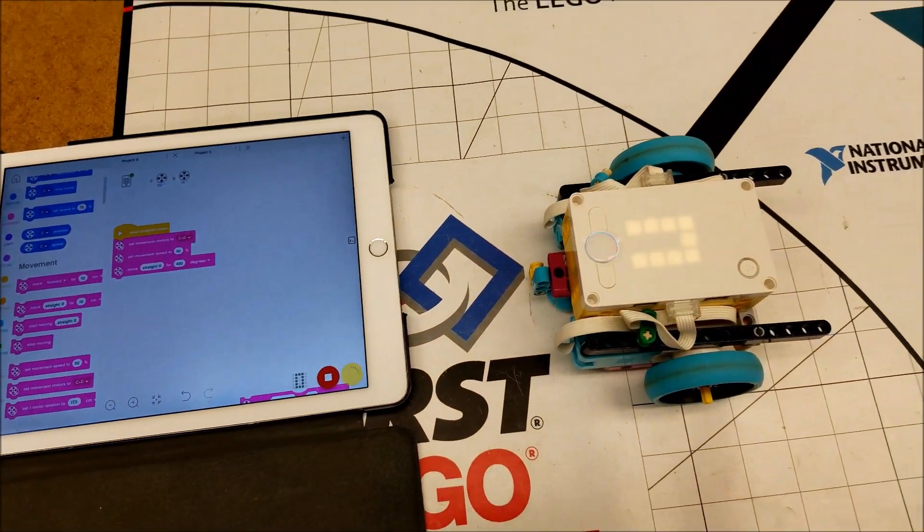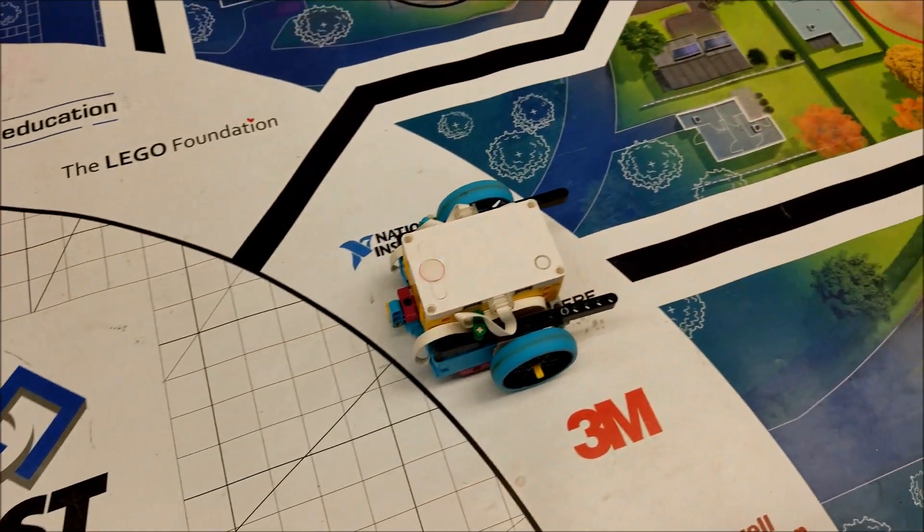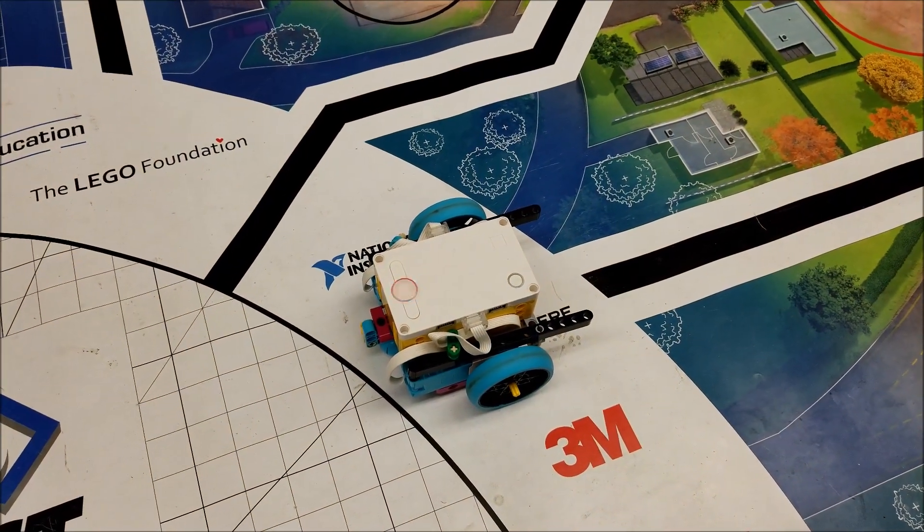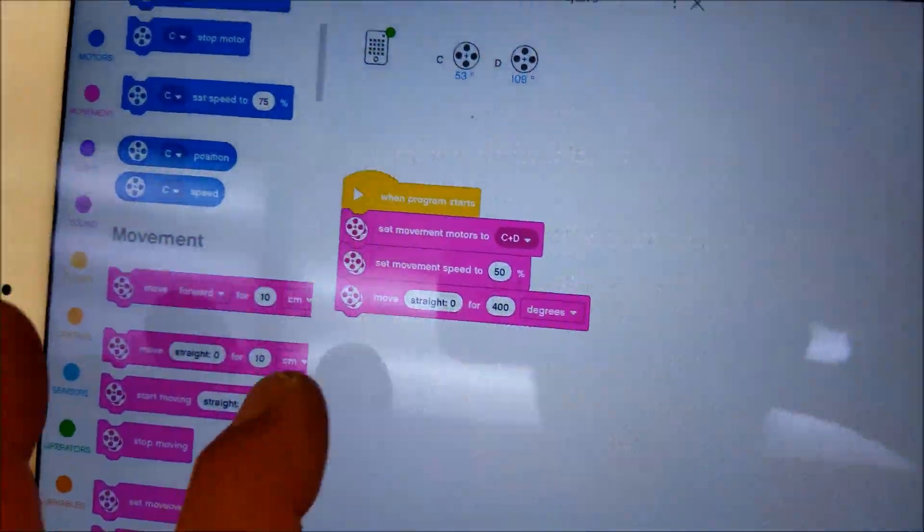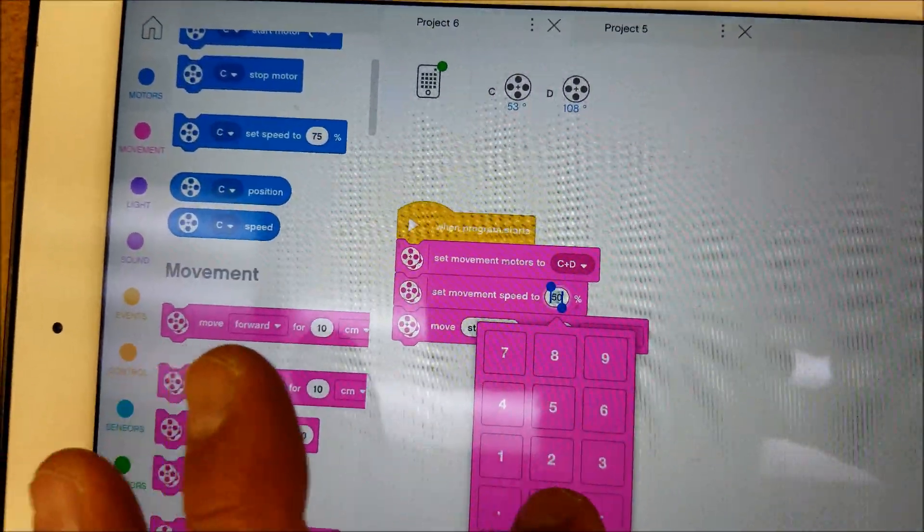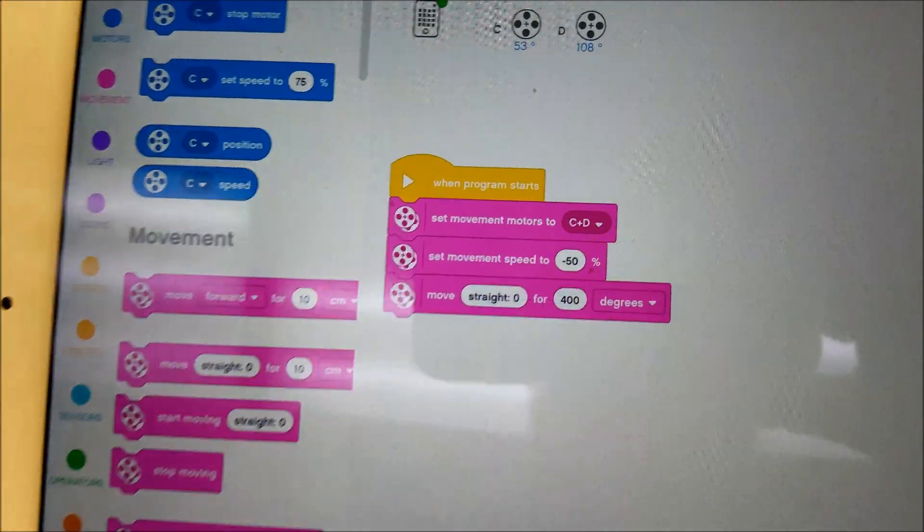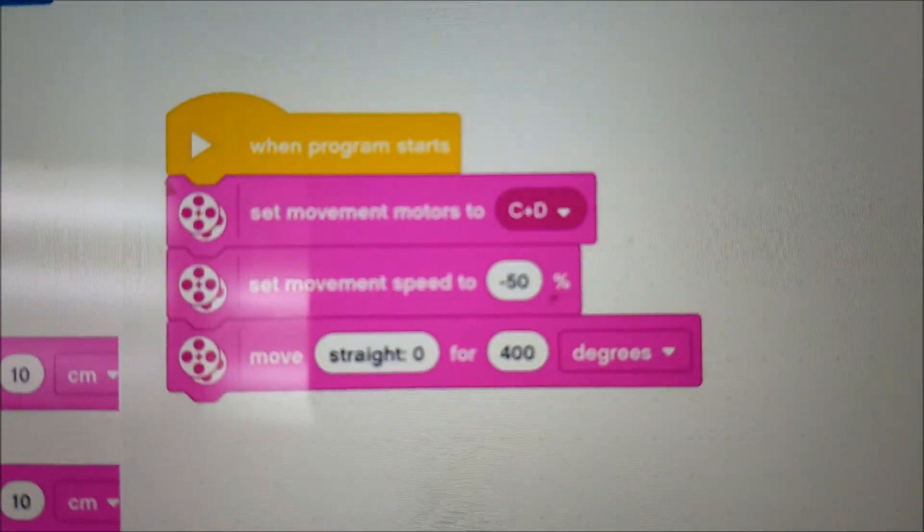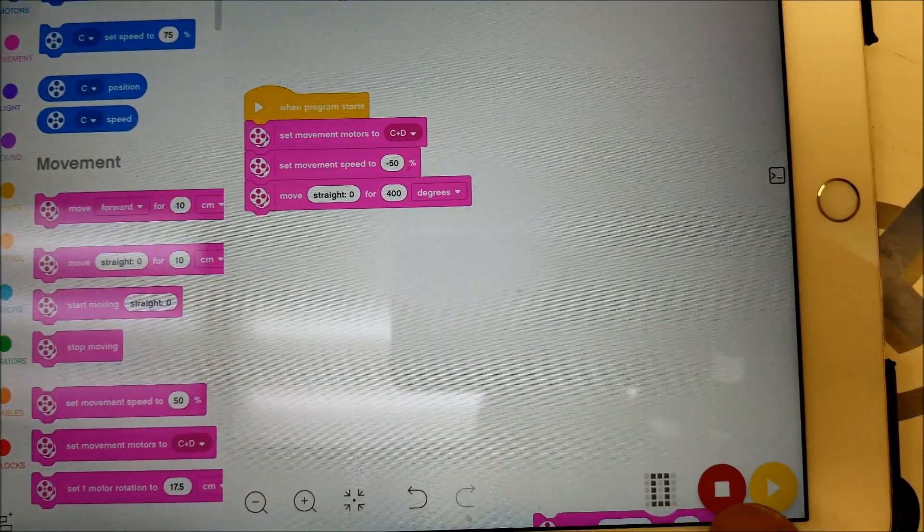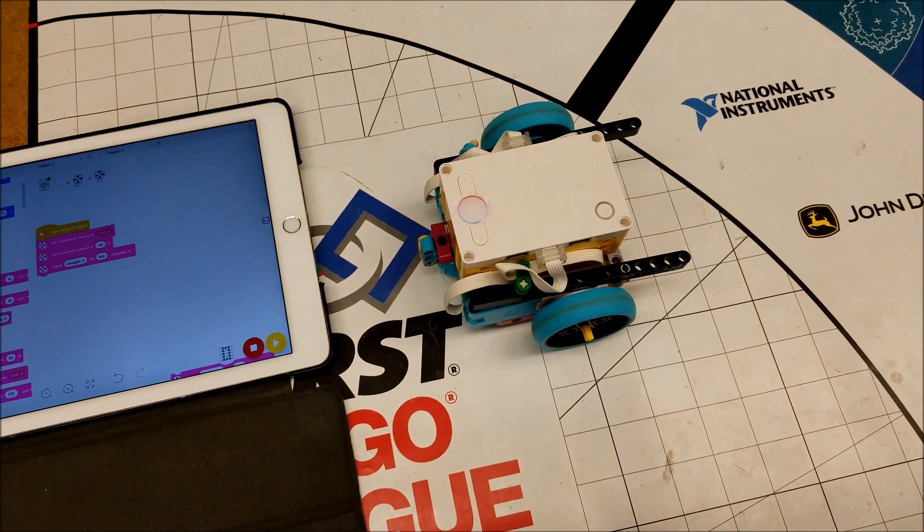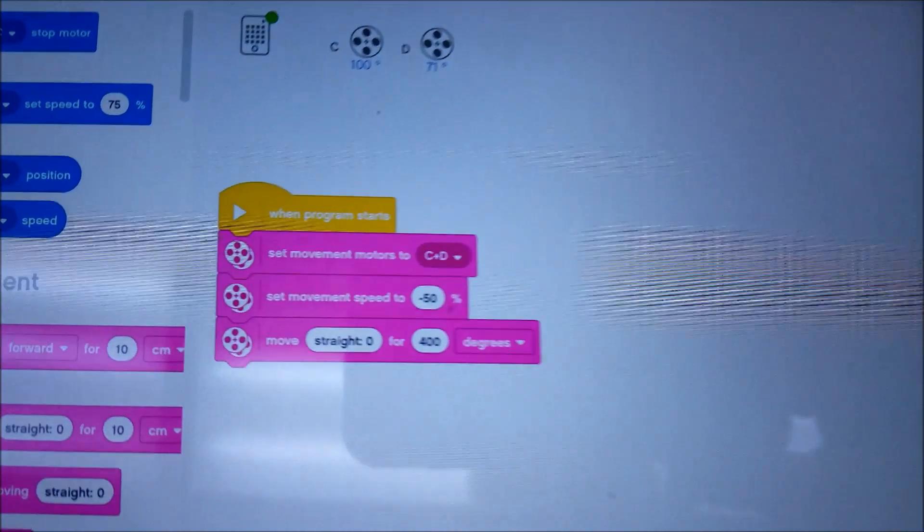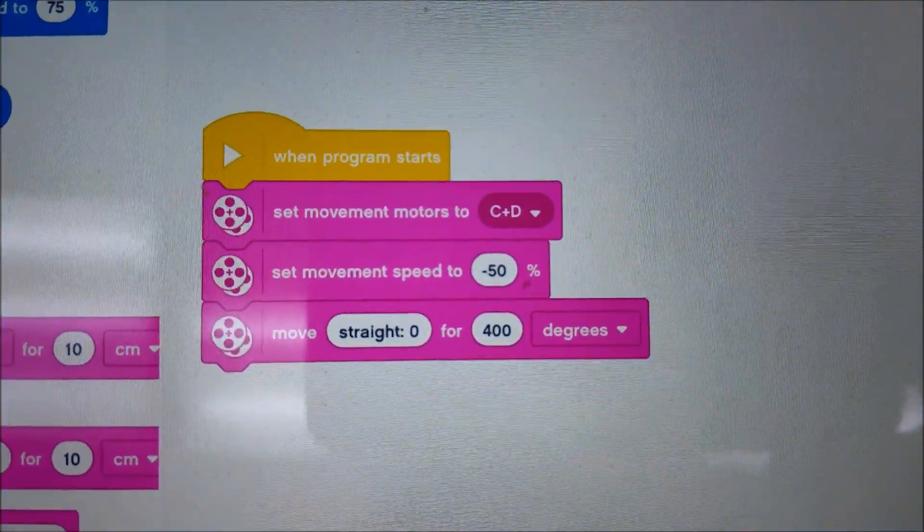Let's just go ahead and start that. There's the 400 degrees. You can mess around with this. If I want this to go backwards, we're just going to make that a negative 50 and it will basically go backwards. So there is basically how I would do a forwards and a backwards just to get going.